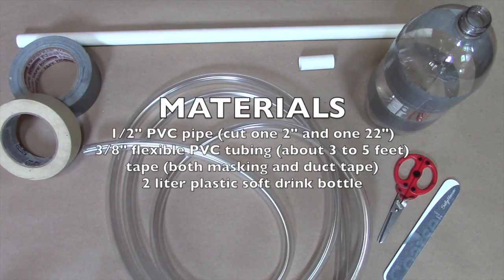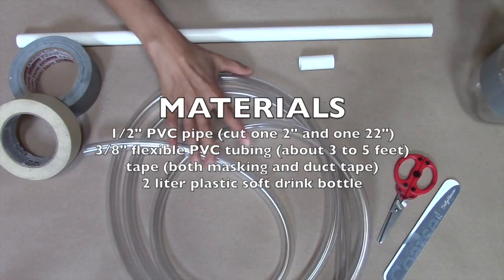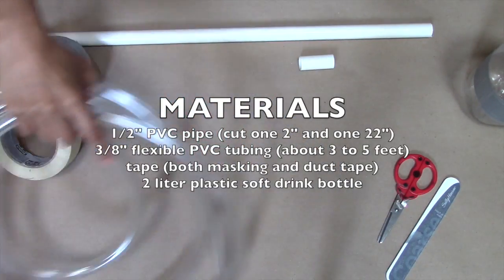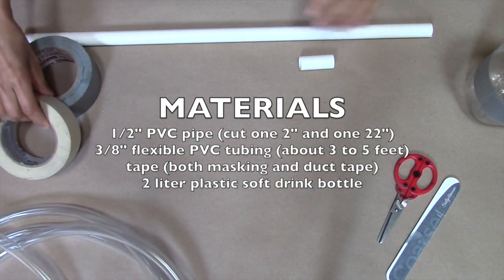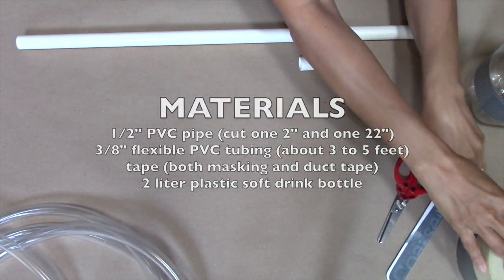For this launcher you'll need a 1.5 inch PVC pipe and 3/8 inch flexible PVC tubing. You'll also need a 2 liter plastic soft drink bottle and some tape. I use both masking tape and duct tape.